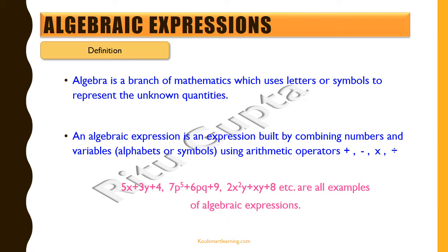Some examples are 5x plus 3y plus 4, and 7p raised to power 5 plus 6pq plus 9, and so on. These are examples of algebraic expressions where numbers are combined with variables like x, y, p and q to form these expressions.